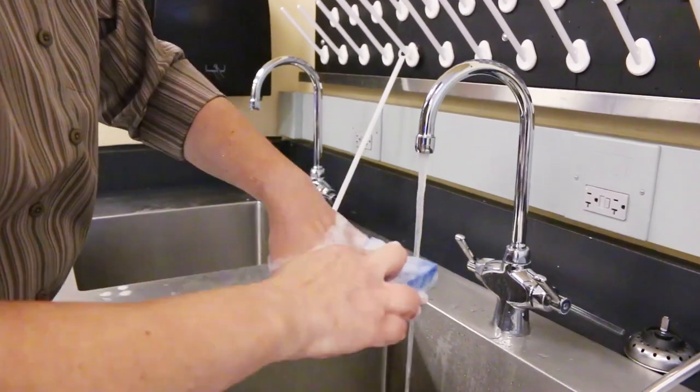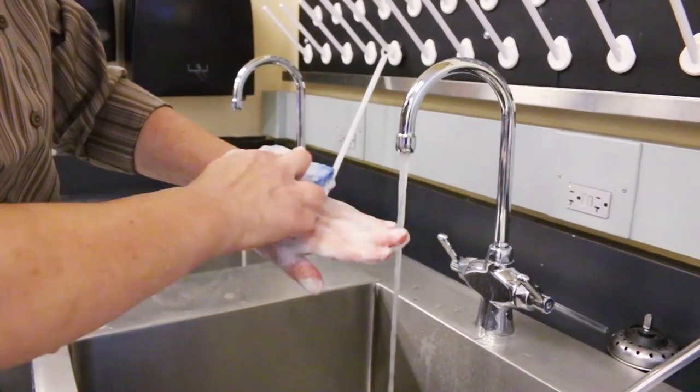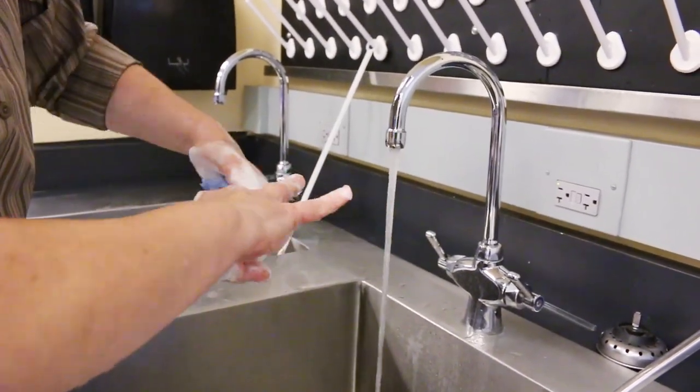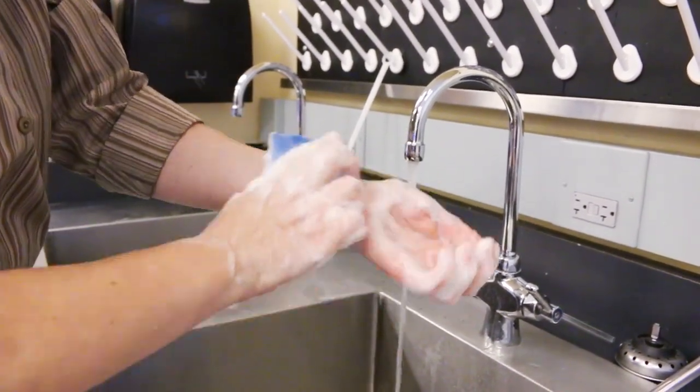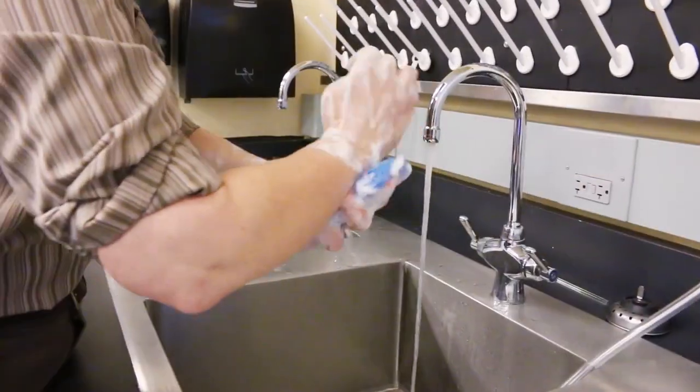Use the sponge to clean the palm of the left hand and repeat on the right. Step 15, clean your left forearm in a circular pattern around the arm from the wrist to elbow and repeat that on the other side.